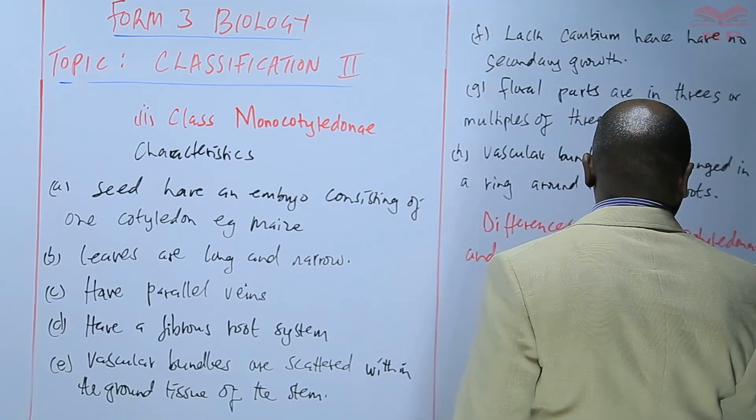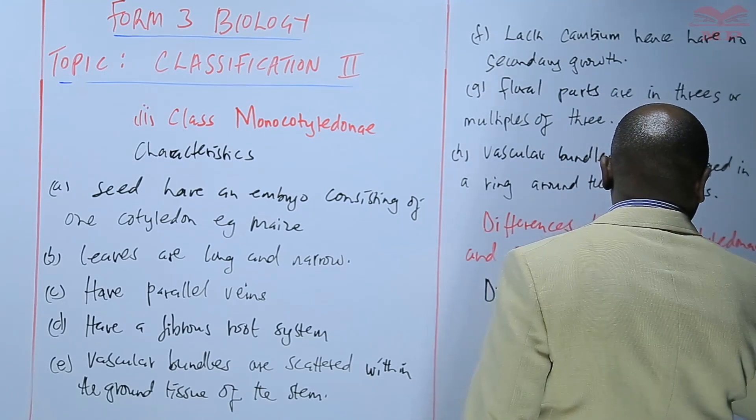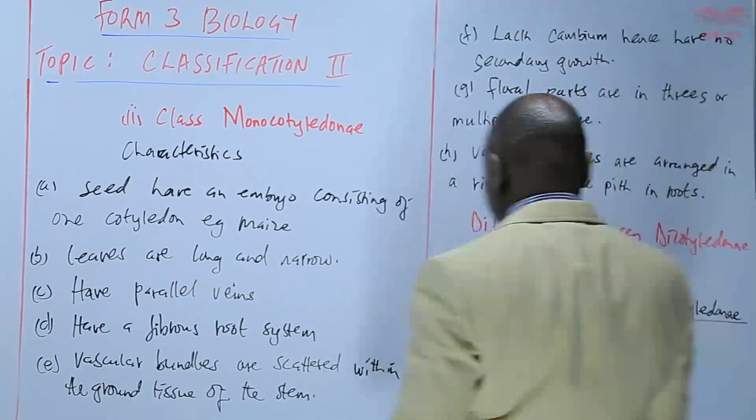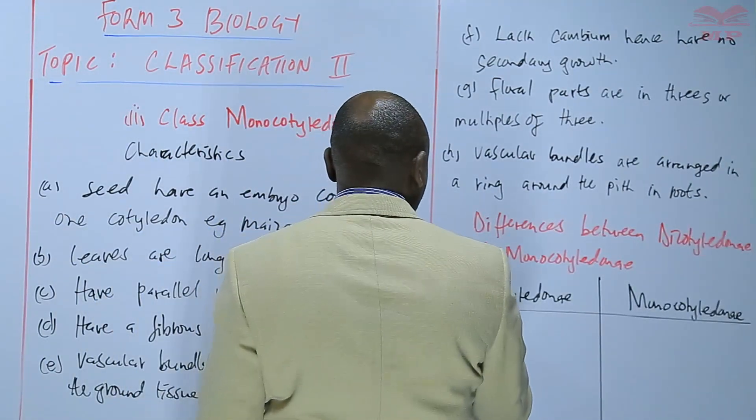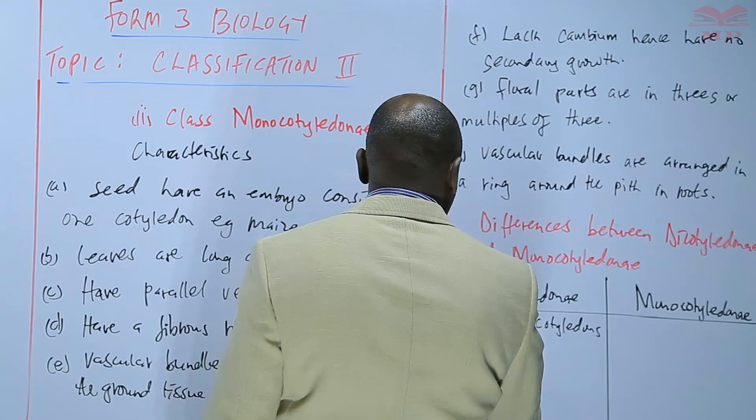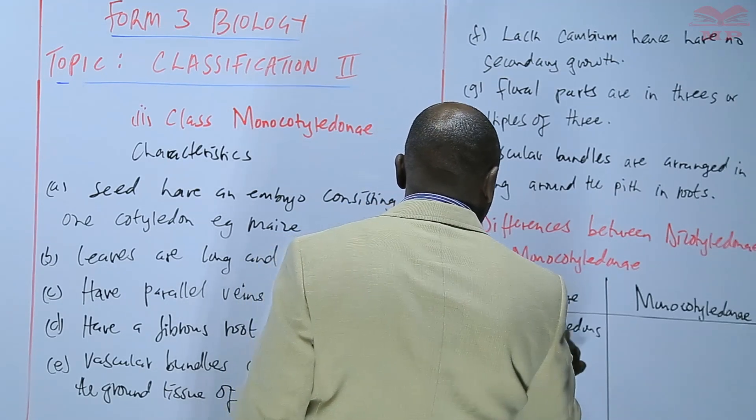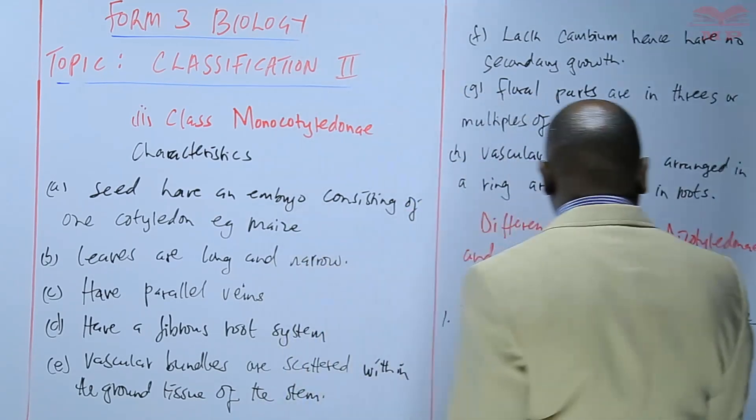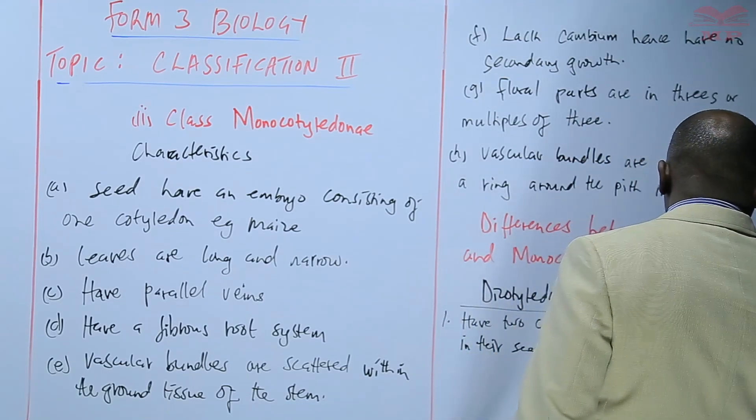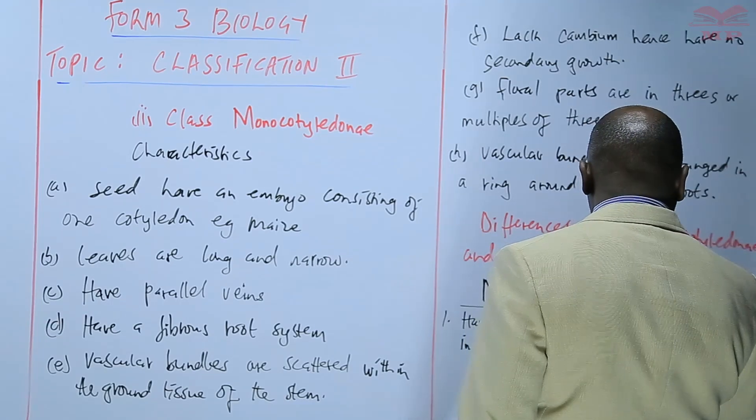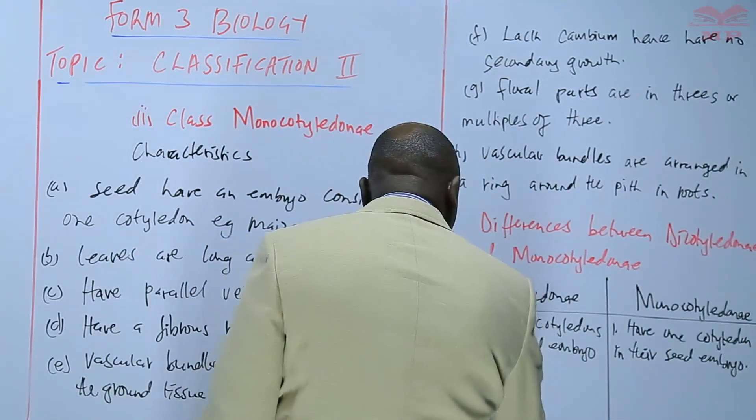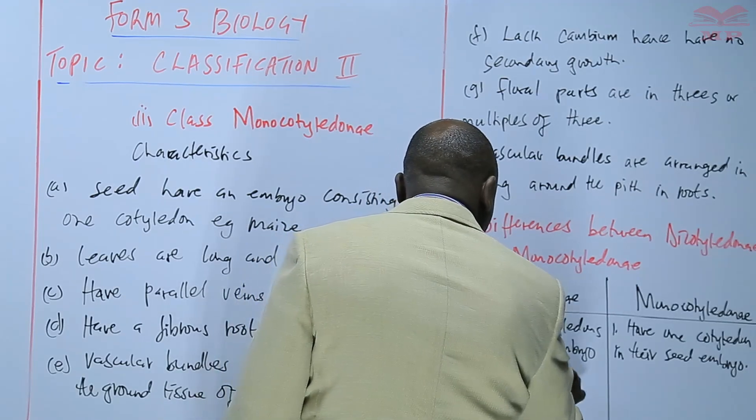Monocotyledonae versus Dicotyledonae. Dicotyledonae have two cotyledons in their seed embryo. In terms of the roots, the Dicotyledonae have a taproot system.